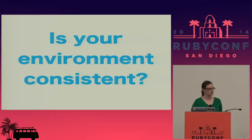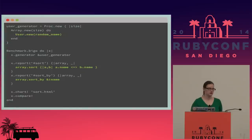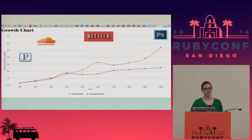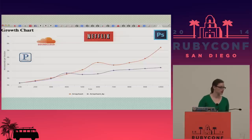The first question to ask yourself is: is my environment consistent? I'm going to compare the `sort` method and the `sort_by` method. `sort_by` is really cool if you want to sort by a known method name on your object. Here I'm creating a bunch of random users and comparing how to sort them by name using `sort` versus `sort_by`. This is what it looks like when I'm running Netflix, SoundCloud, Pandora, and Photoshop all at the same time — the graphs are very wiggly and I'm not getting consistent output.